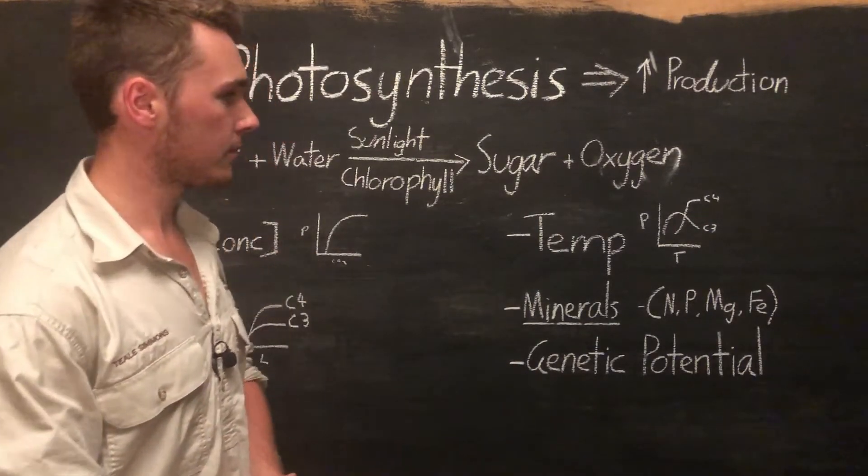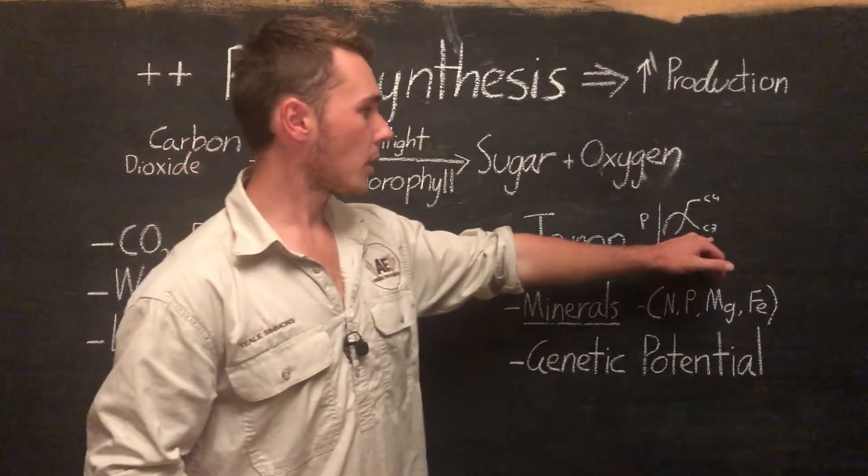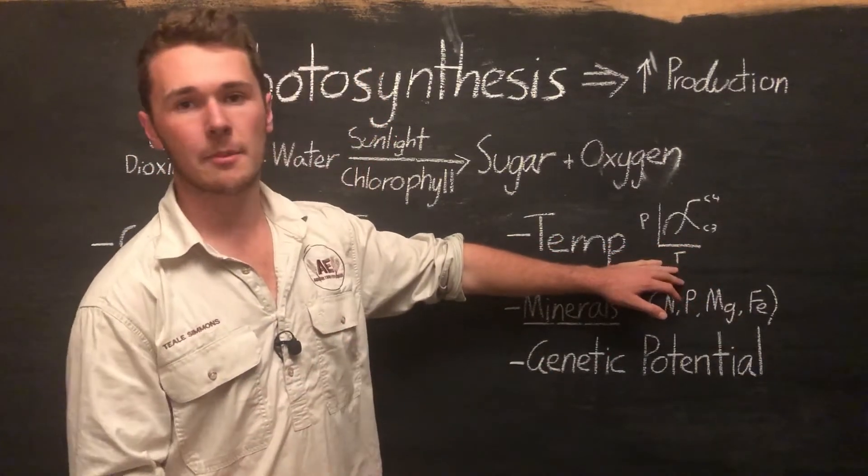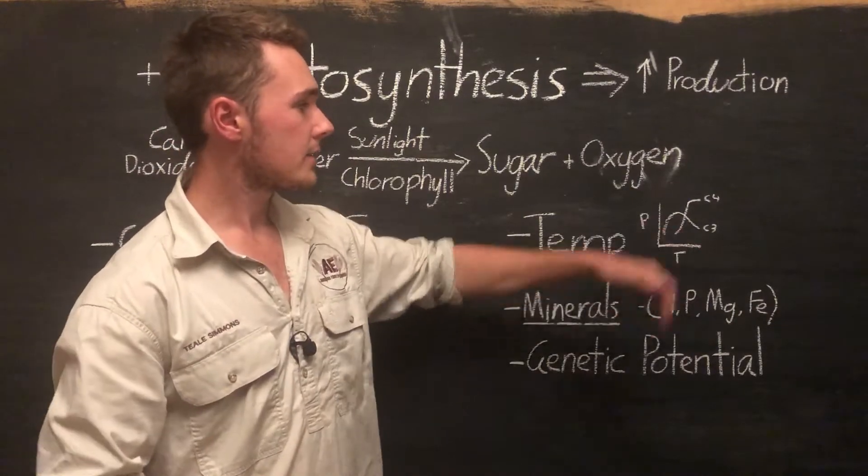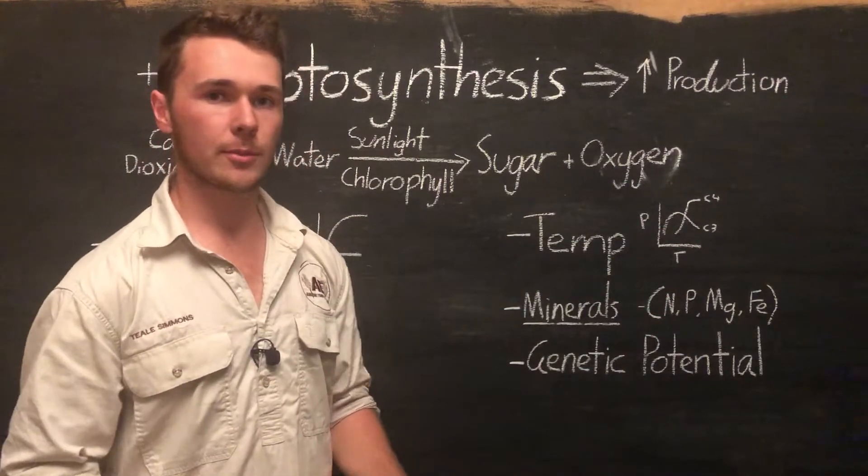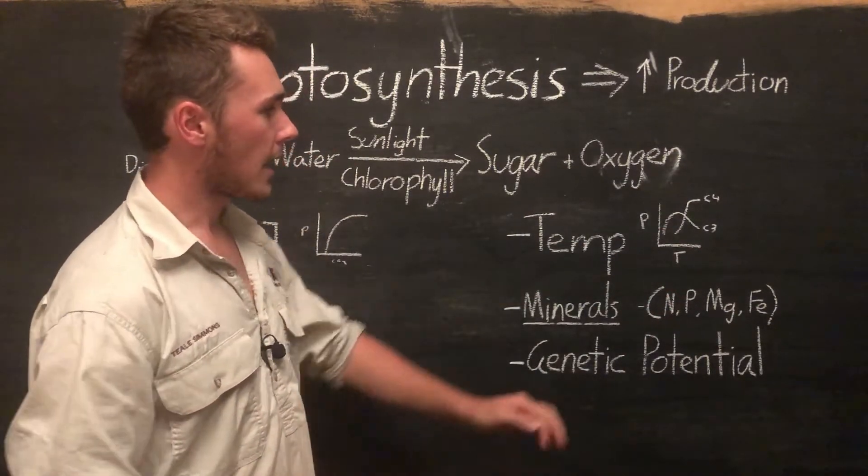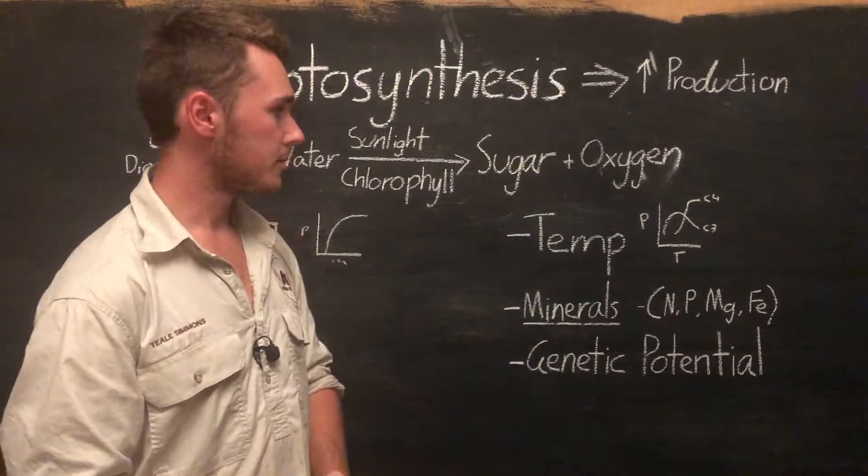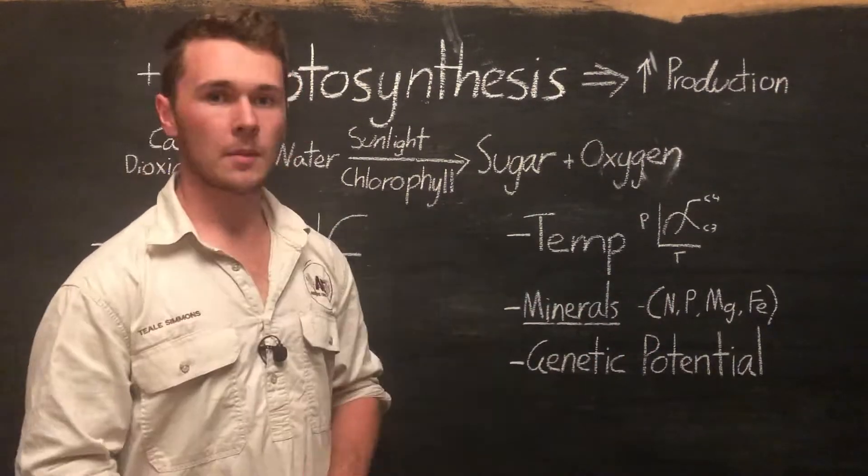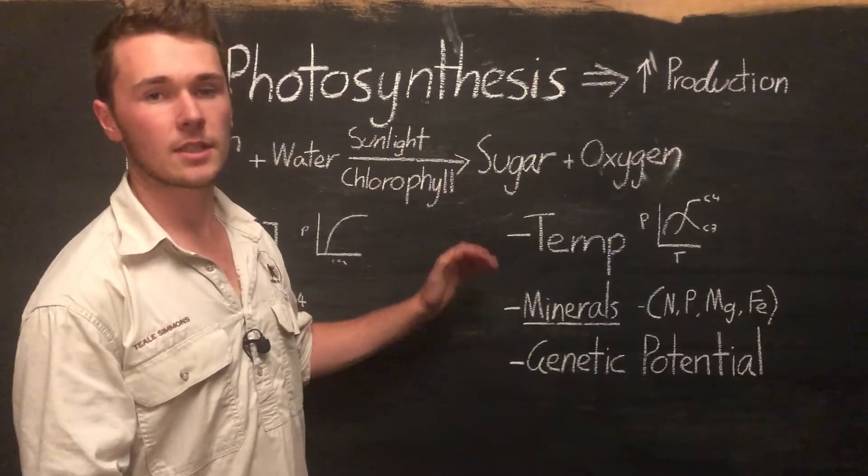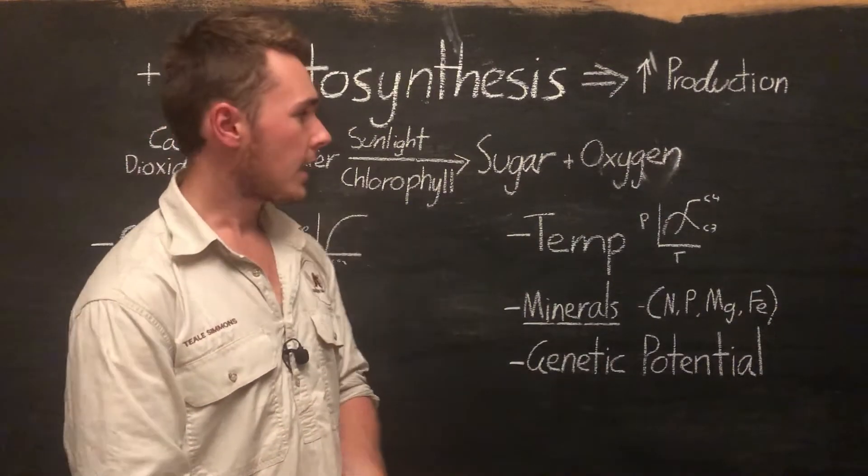There's a sweet spot for our plants to photosynthesize in at different temperatures. Our C3 plants are going to have an optimal temperature in colder climates than our C4. C4 is a bit more tropical, whereas C3 is a bit more temperate or in cooler environments.